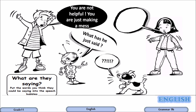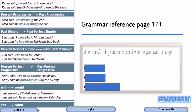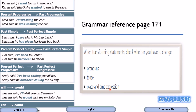Let's get started. Let's go through this short conversation between the displayed characters. The boy says: 'You are not helpful, you are just making a mess.' What has he just said? The girl is supposed to report what the boy has said. As previously studied, when transforming statements check whether you have to change pronouns, tense, place and time expressions. You can refer to the grammar reference page 171.